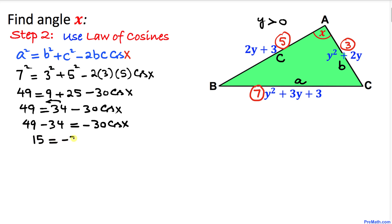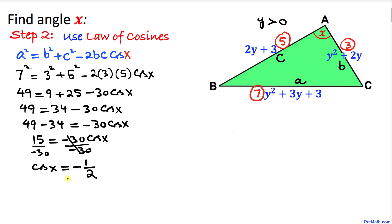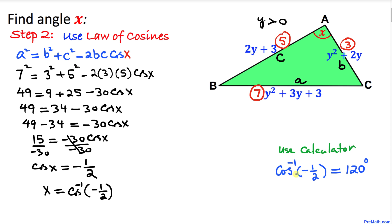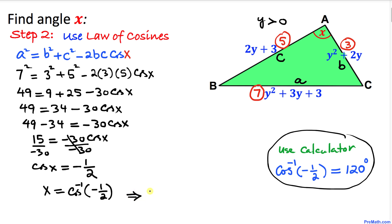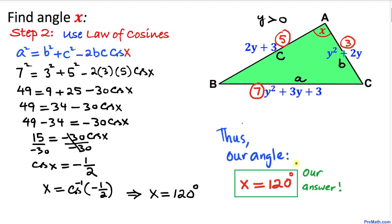Rearranging, we get 15 equals negative 30 cosine of x. Dividing both sides by negative 30 to isolate cosine of x, we get cosine of x equals negative 1 over 2. Therefore, x equals cosine inverse of negative 1 over 2. Using a calculator, cosine inverse of negative 1/2 is 120 degrees. So our angle x turns out to be 120 degrees — that's our final answer.